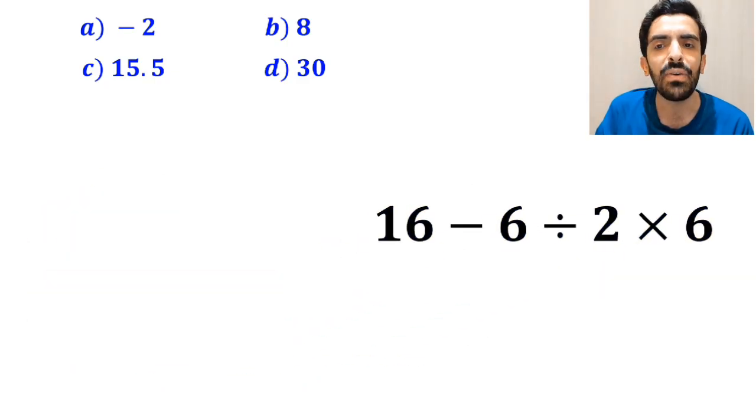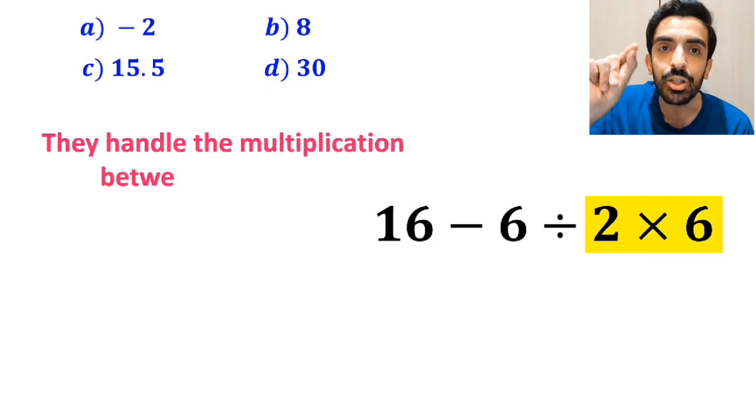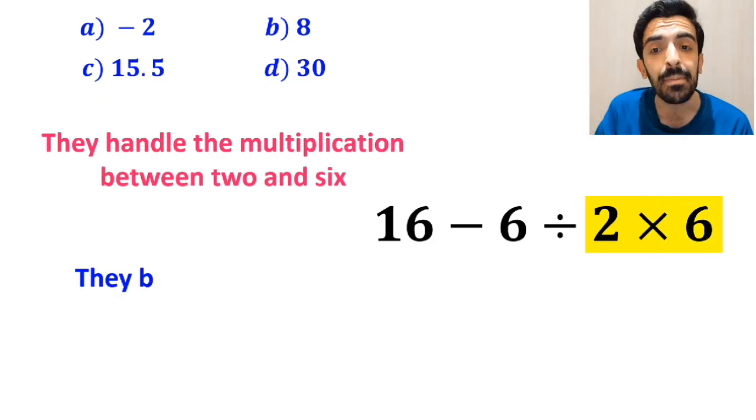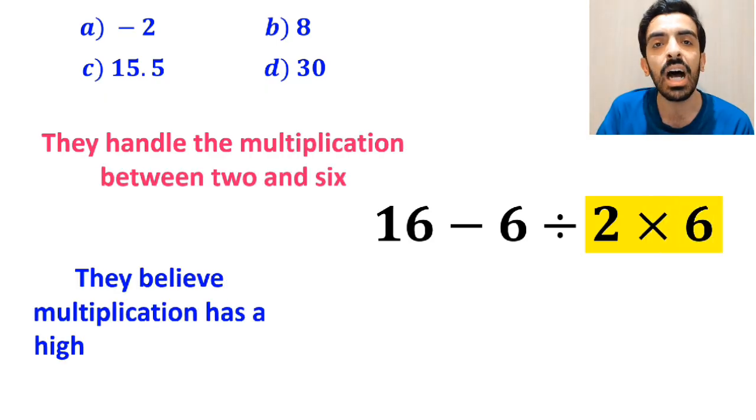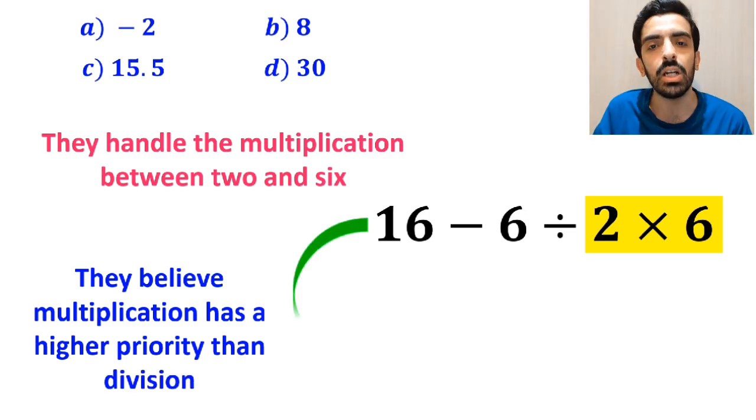In the next step, first they handle the multiplication between 2 and 6 because they believe multiplication has a higher priority than division. So, they rewrite this expression as 16 minus 6 divided by 12.